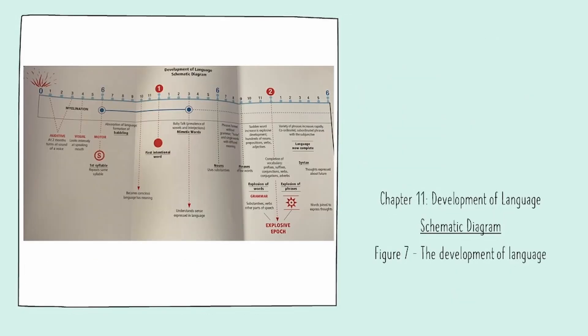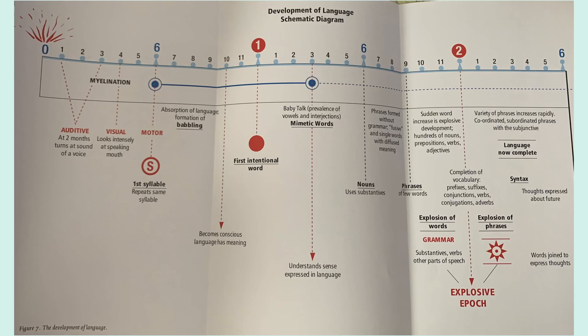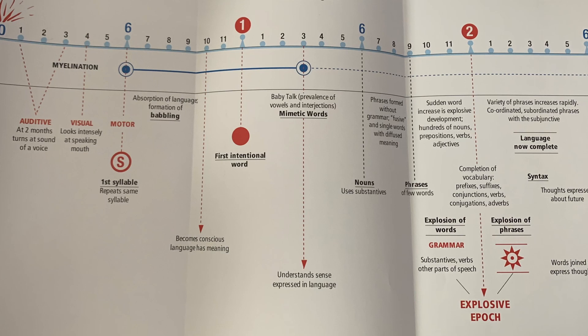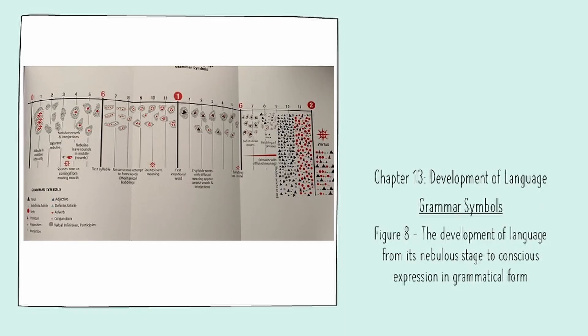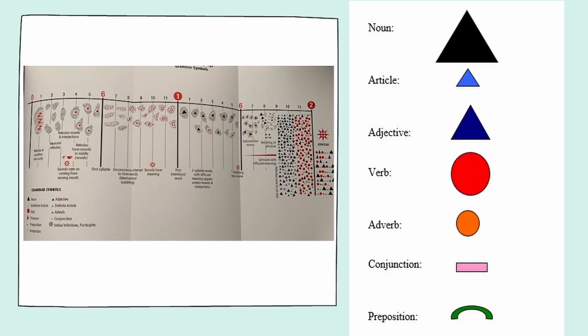Before we begin, let's take a look at Chapter 11 one more time. We have this chart in Chapter 11, Figure 7, which is the Development of Language Chart. If we zoom in, we can see that a lot of things happen between the ages of 0 and 2.5. We're going to take this same chart and look at it just a little bit differently. In Chapter 13, we're going to look at this chart again through the lens of the grammar symbols.